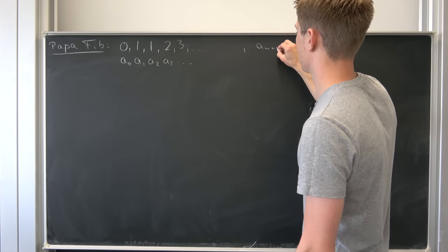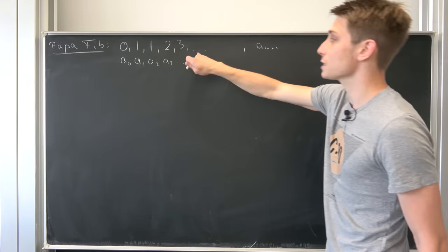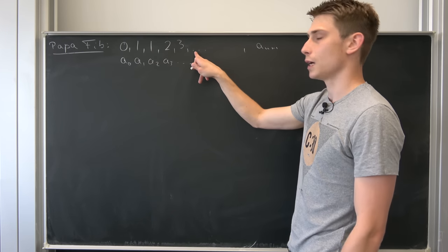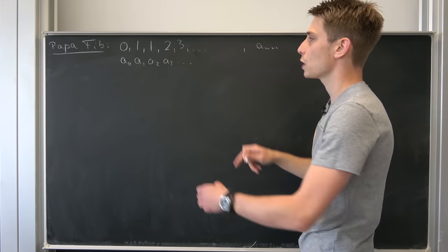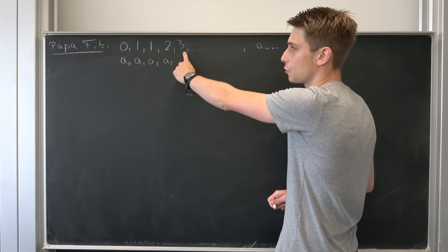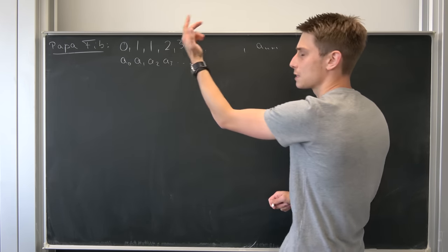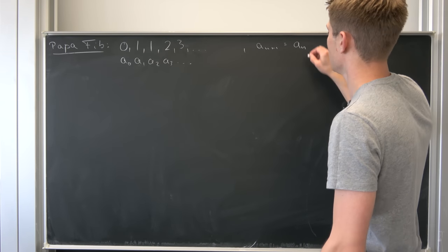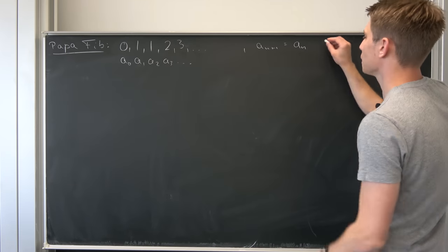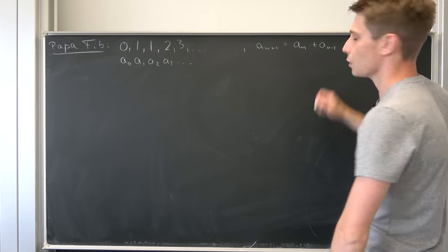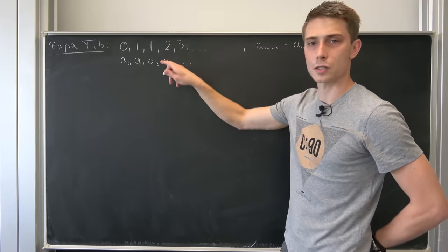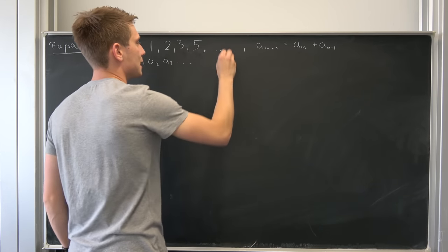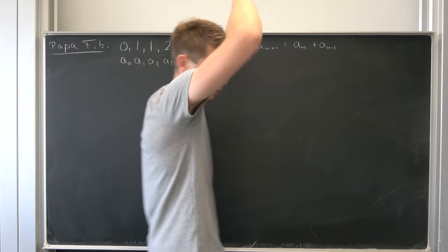So the a_{n+1} member — let's find this member out right here. We are going to construct it as follows: we are going to take the member right before it, say the three, and then add the member before the three to it. That means we take the a_n member and add the a_{n-1} member to it. So three plus two equals five. And next number would be eight, and so on.